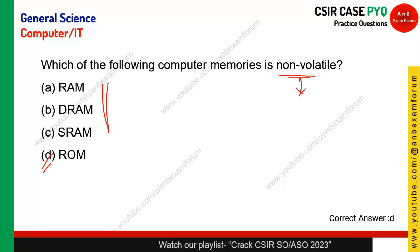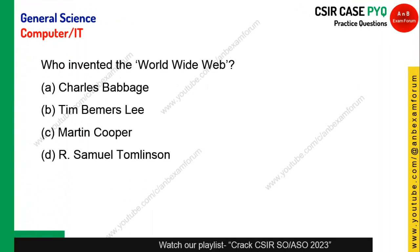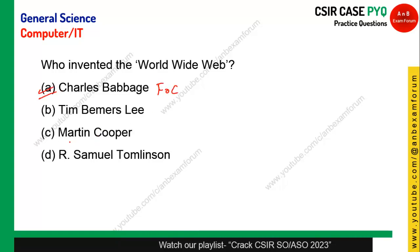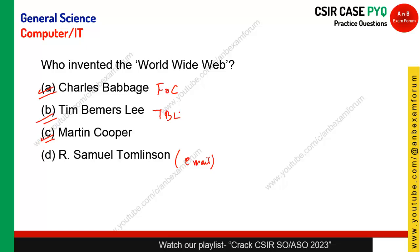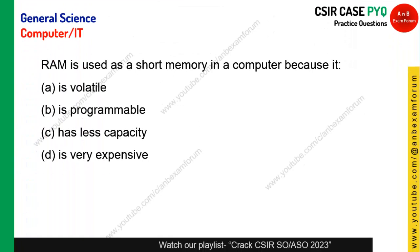Who invented the World Wide Web? Charles Babbage is known as the father of the computer. Martin Cooper is somewhat related to the telephone. Ray Tomlinson invented email. Tim Berners-Lee, also known as TBL, invented the World Wide Web. Option B is the right answer.